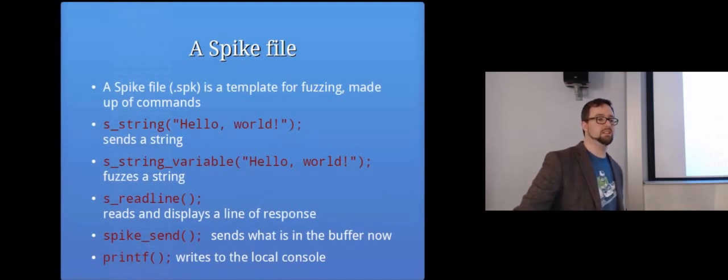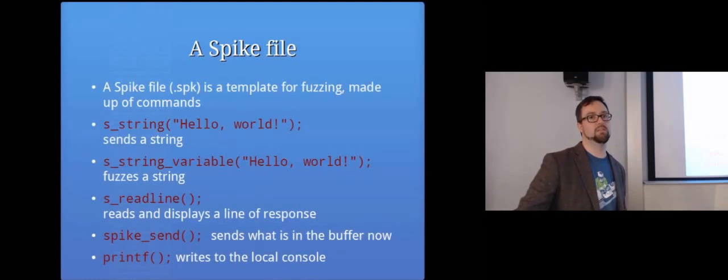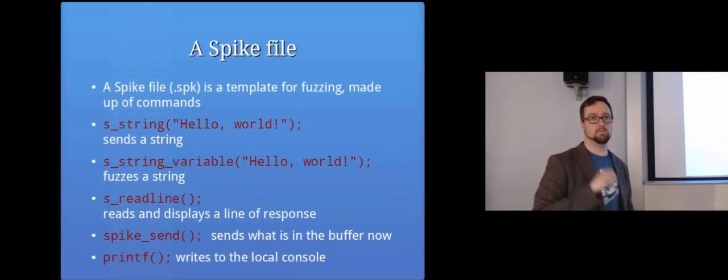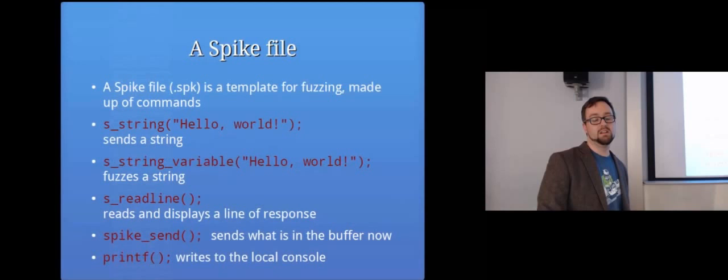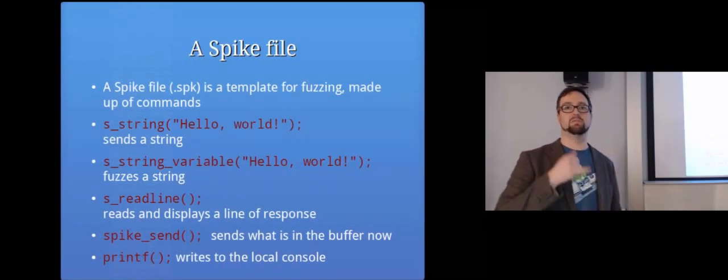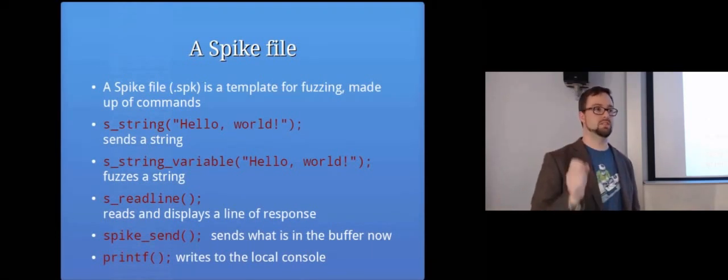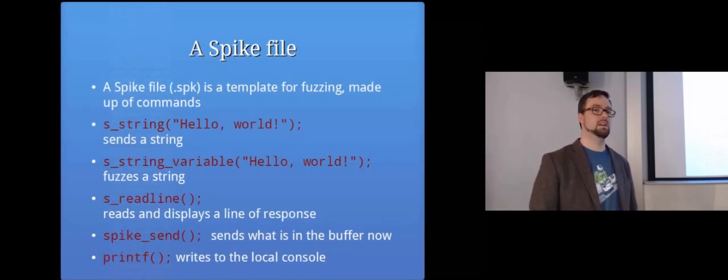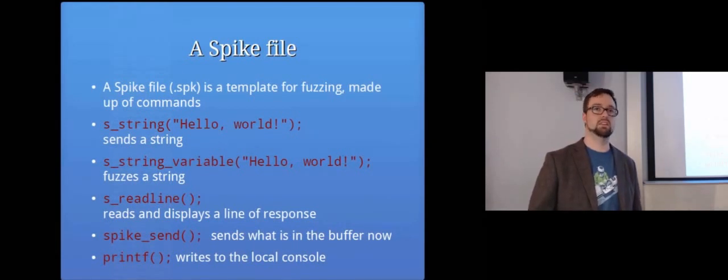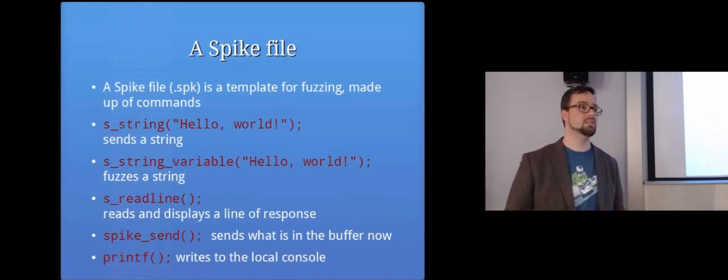spike_send basically forces it to send any of the strings or anything that it's got in the buffer, because it might be waiting to fill out the buffer a bit more before it sends it. So sometimes you might just want to tell it, just send everything that I've told you to send now. And printf doesn't do anything in terms of fuzzing the program. It just prints something to the local console so that you can see what it's doing. So you just want to include status messages or something like that. And that's basically the main aspects of a spike file. So if you want it to connect to an FTP server, you might basically include s_string user anonymous, to tell it to log in as anonymous, and then pass anonymous, and then you start sending commands to it and tell it to fuzz the commands. It's fairly straightforward.